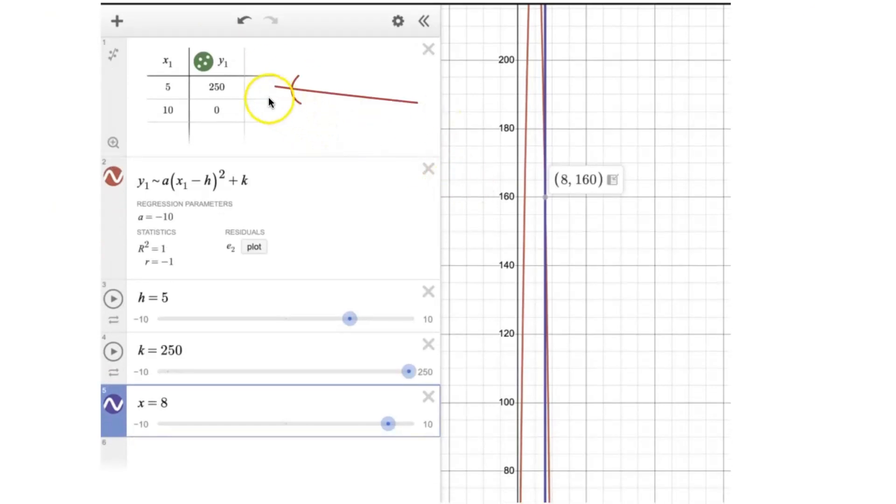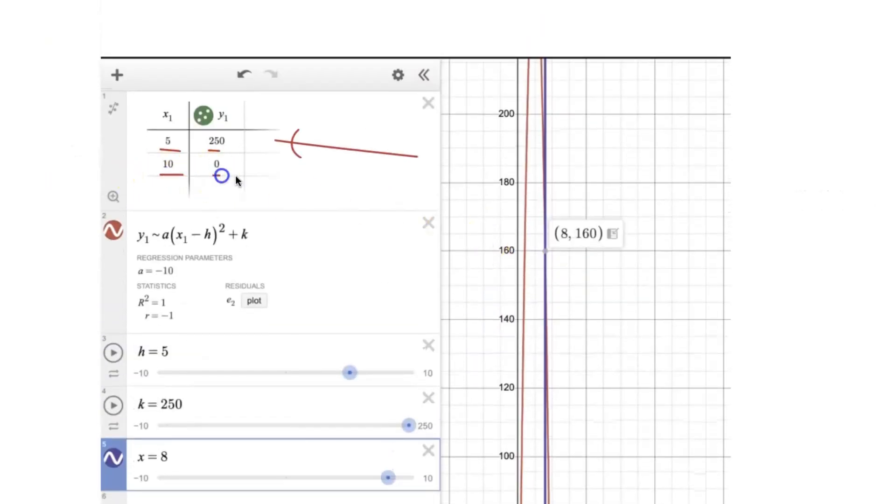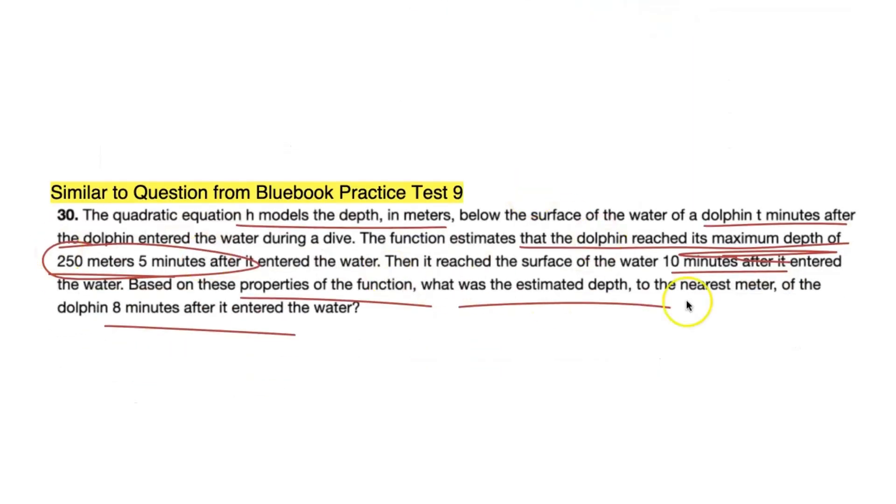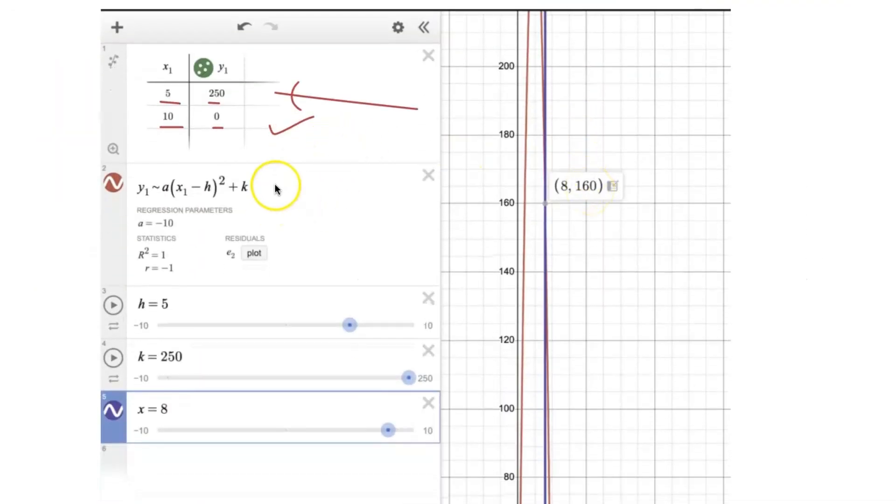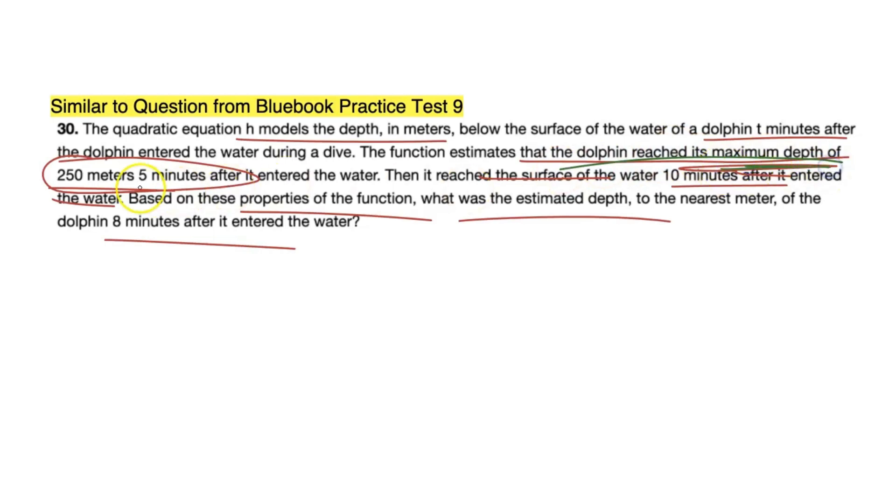So how exactly do we solve it with Desmos? Well, you input it as a table. And we have our two coordinate points, (5,250) as referred to here because it said maximum depth is 250 meters 5 minutes after it entered the water. And then we have (10,0) because it said that 10 minutes after it entered the water, it reached the surface. So the surface, we can infer that that's zero meters there. So we have our two coordinate points, we set up our regression.